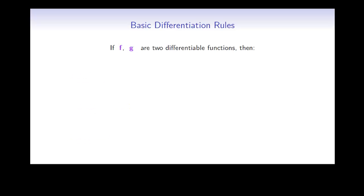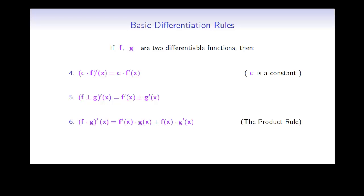If f and g are two differentiable functions, then we have the following. The derivative of c times f is equal to c times the derivative of f, where c is a constant number. The derivative of f plus or minus g is equal to the derivative of f plus or minus the derivative of g. The derivative of f times g is equal to the derivative of f times g, plus f times the derivative of g — this is the product rule.